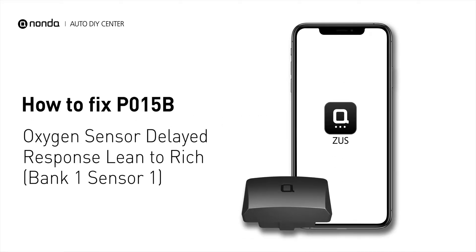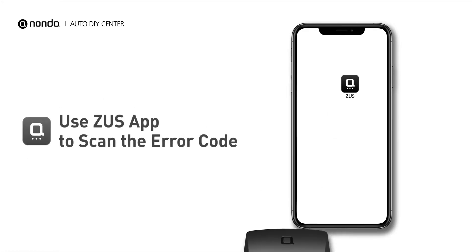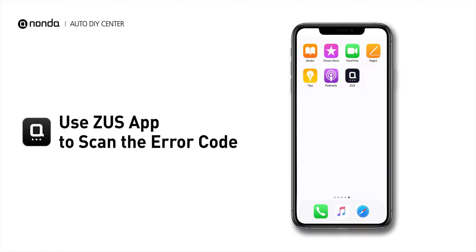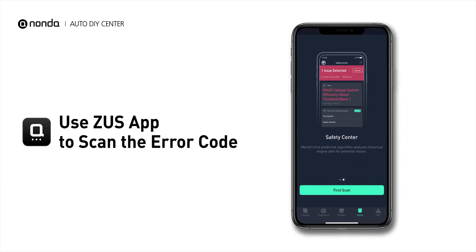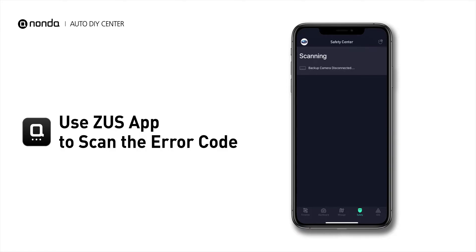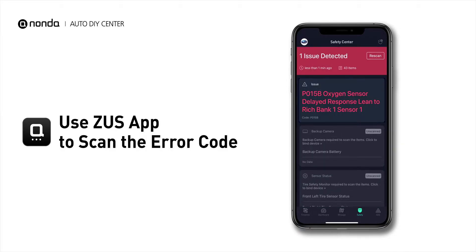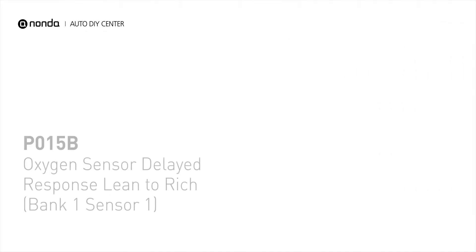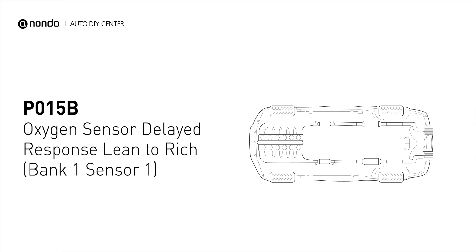If you are getting a P015B error code, this video is going to show you two practical solutions to fix the error code at home. Use the Zeus app to scan your vehicle and see the error code P015B. It means that the powertrain control module is not getting a normal response from the oxygen sensor.